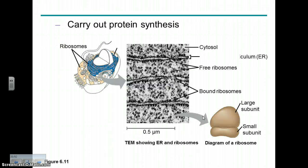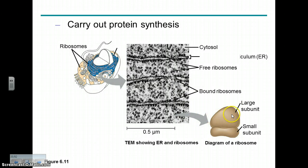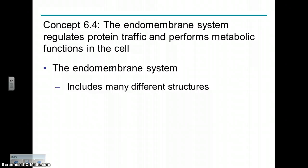Ribosomes are involved with protein synthesis, consisting largely of RNA but also some proteins. There is a large and a small subunit. There can be free ribosomes and ribosomes attached to the endoplasmic reticulum, both involved with protein synthesis.